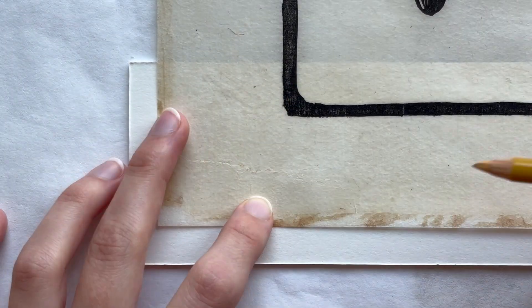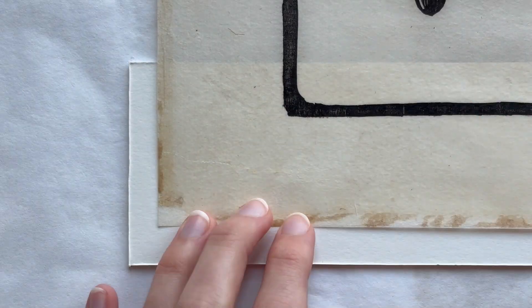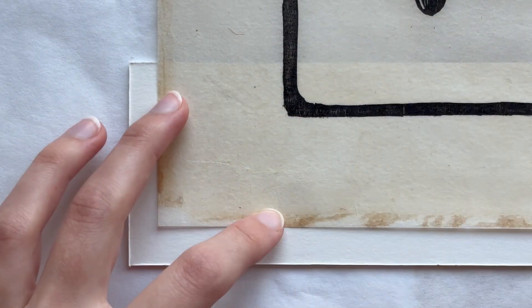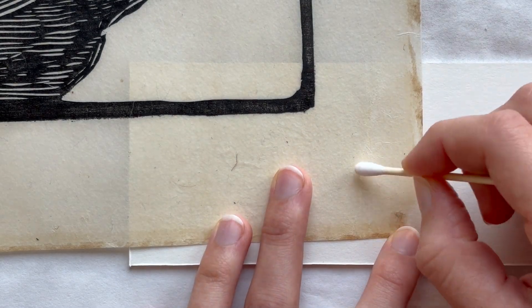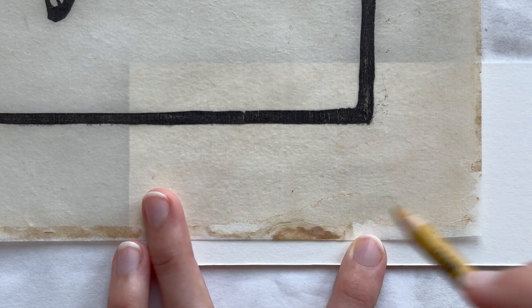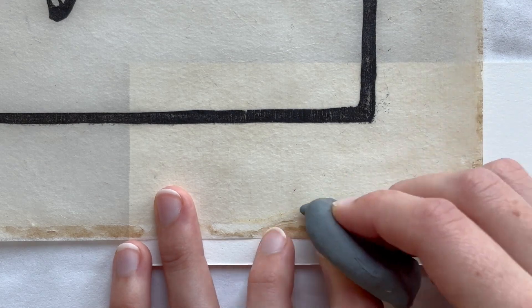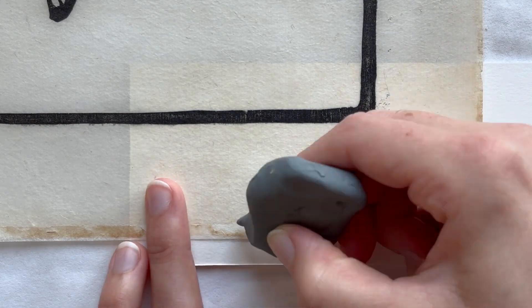There are a couple of small tears that didn't fully come together during the lining, so they are lightly retouched to make them less visible. I do the retouching with pastels, as they give a matte surface that matches the object well. To avoid sharp transitions, the pastel is gently blended with a cotton swab and an eraser.